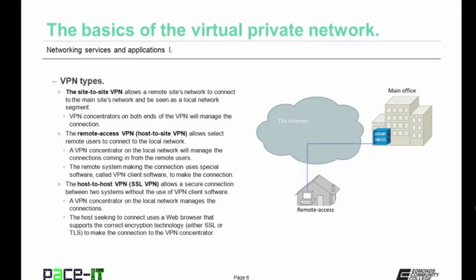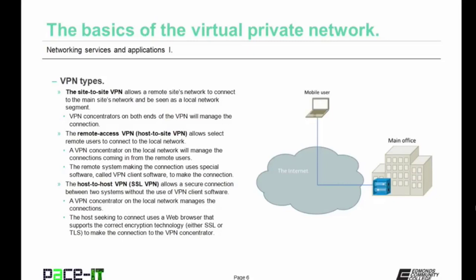The remote system making the connection uses special software called VPN client software to make that connection. The third type of VPN is the host-to-host VPN, often called an SSL VPN. It allows a secure connection between two systems without the use of VPN client software. A VPN concentrator on the local network manages the connection. The host seeking to connect uses a web browser that supports the correct encryption technology — either SSL or more likely TLS — to make the connection to the VPN concentrator.